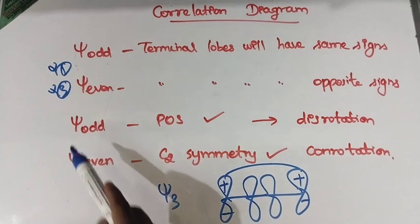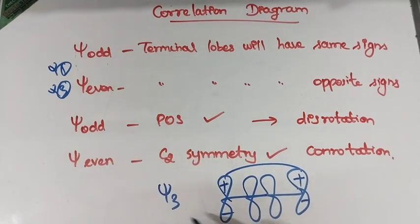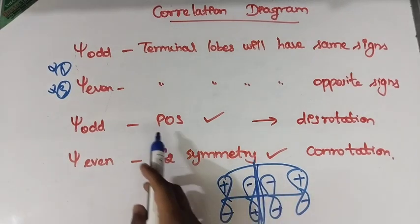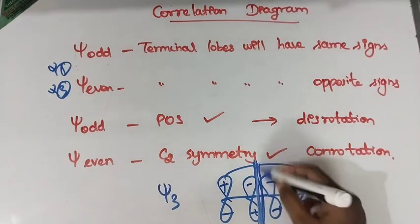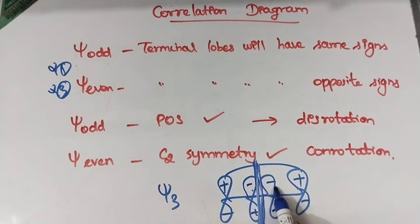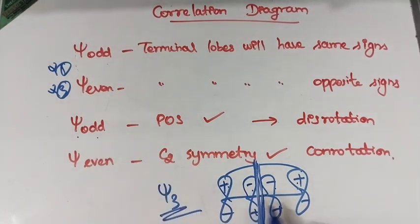The second important point: if psi is odd it will have a plane of symmetry. What is plane of symmetry? You can bisect them equally. If I bisect in the center, here also minus, here also minus, here also plus, here also plus — it just reflects, both parts are the same. That is known as plane of symmetry. So whenever you have a psi odd number, that particular psi will have plane of symmetry.